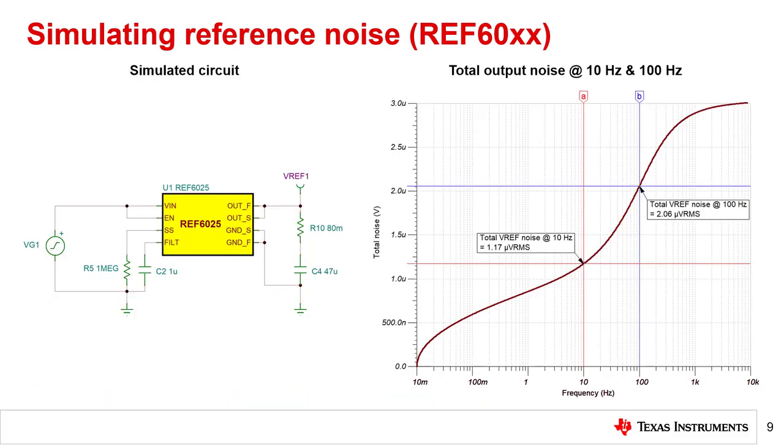If a SPICE model is available for your component, you can generally find it on the device's product folder on ti.com. The REF6025 model is shown here on the left with basic connections included. Running a total noise analysis of the circuit on the left yields the total RMS voltage noise plot on the right. The noise at 10 hertz bandwidth is called out at 1.17 microvolts RMS. This is very similar to the 1.14 microvolts RMS value calculated on the previous slide, providing confidence in the simulated results.